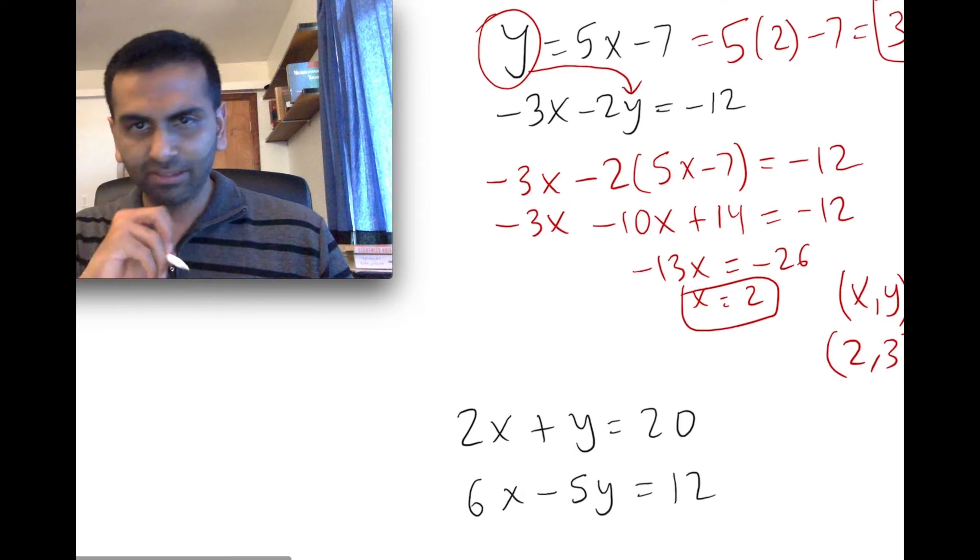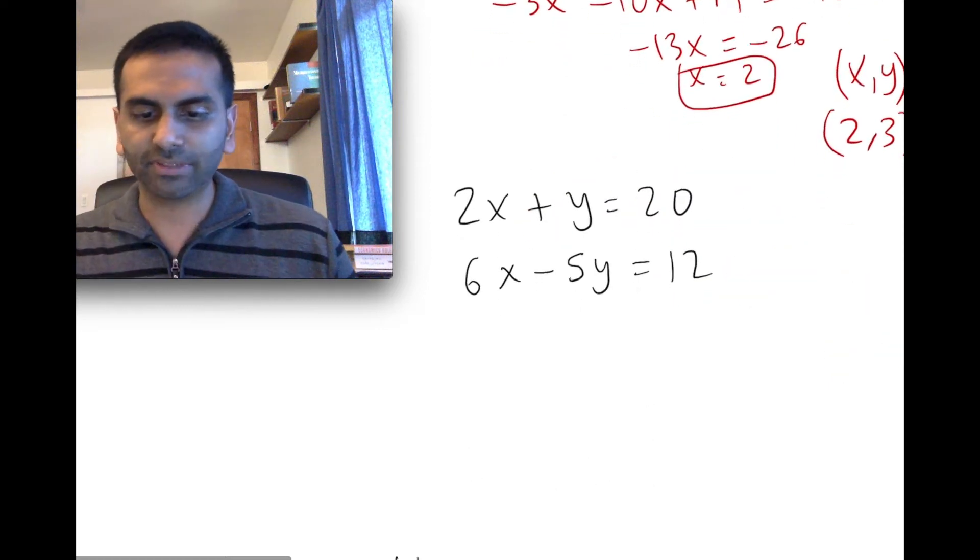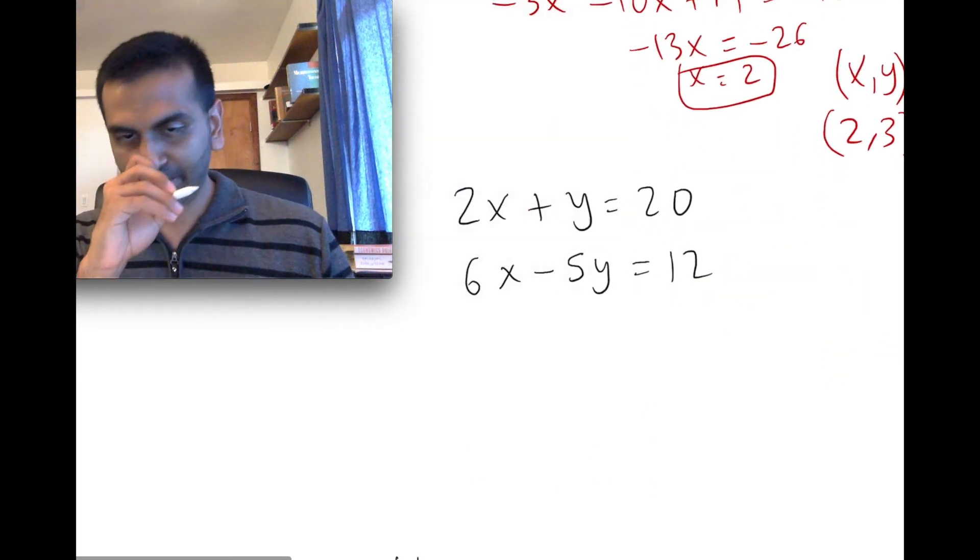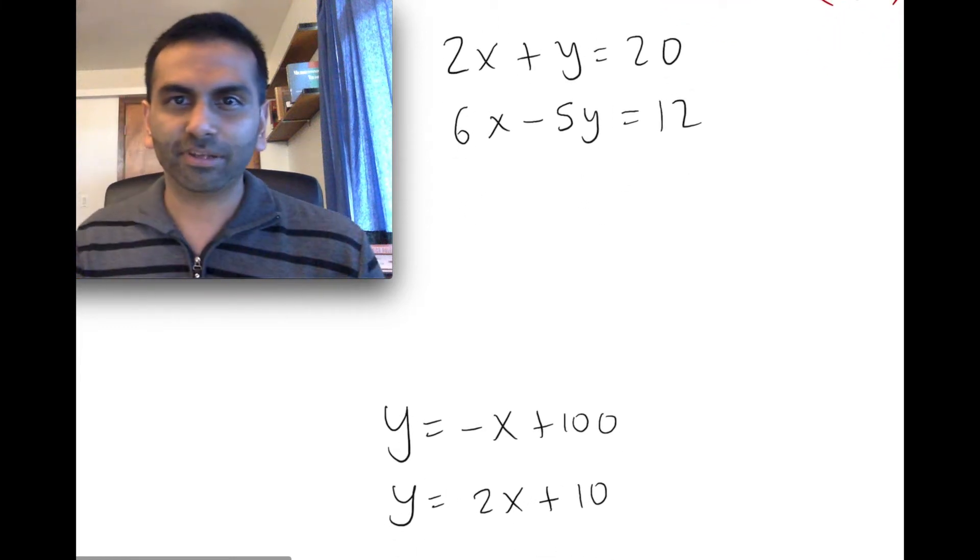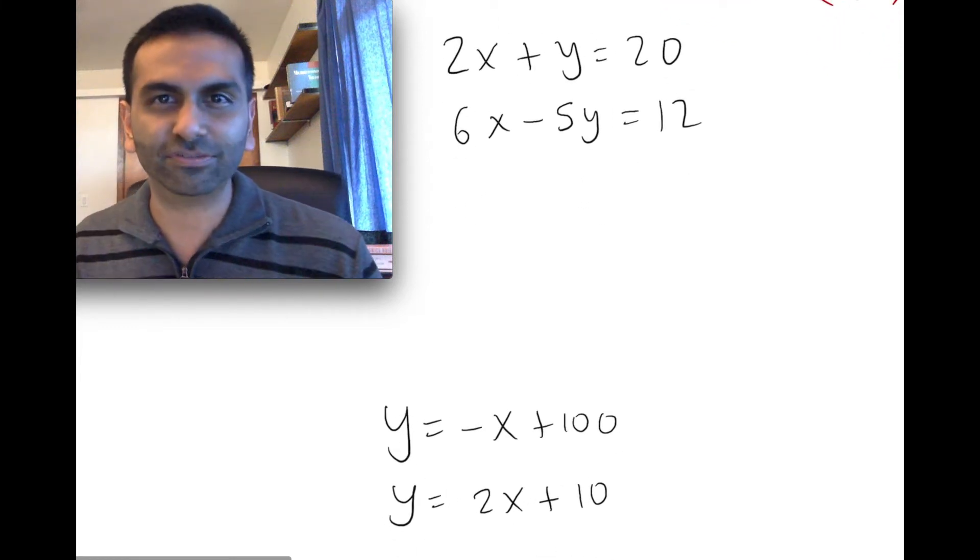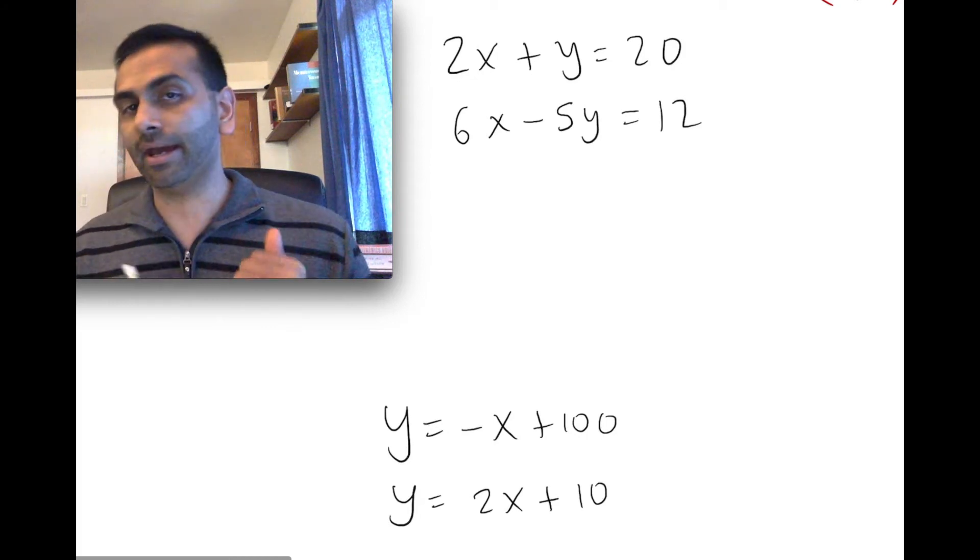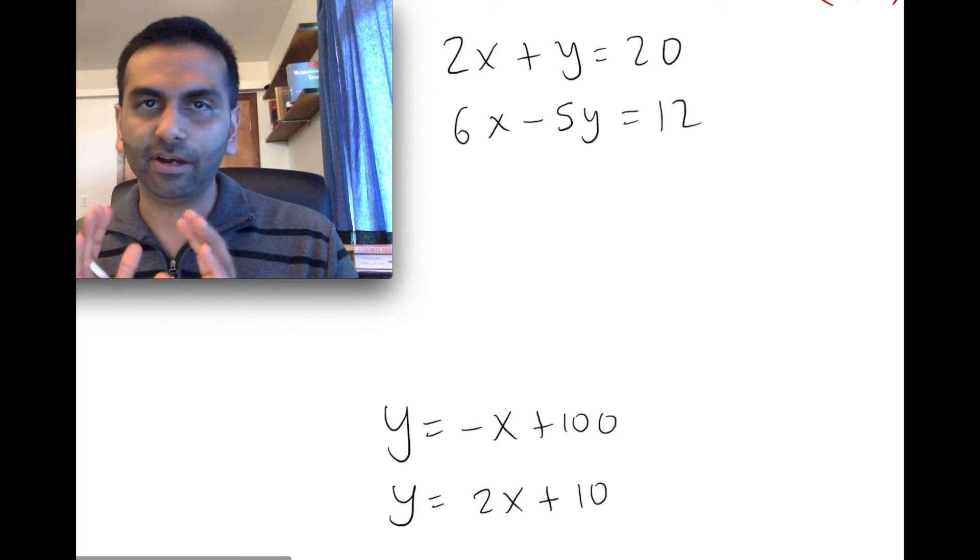Alright, let's just do one other example, and then we'll talk about what this means graphically. So let's say it's this. Let's say 2x + y = 20 and 6x - 5y = 12. So again, doesn't matter which equation and doesn't matter which variable.